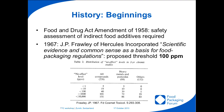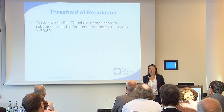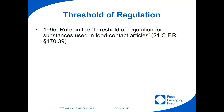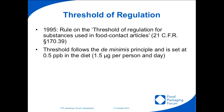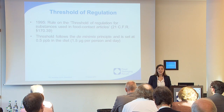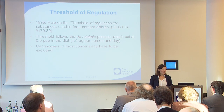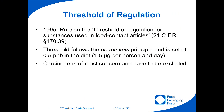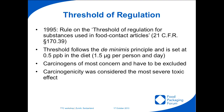Of course he excluded some groups — heavy metals and pesticides. Then in 1995, the FDA introduced a new rule called the Threshold of Regulation, going back to Frawley's idea of a probability distribution for unknown chemicals to cause an effect at a certain threshold. The FDA set that threshold at 0.5 ppb — four orders of magnitude below what Frawley proposed 30 years earlier — which gives you an indication of how much analytical detection sensitivity increased over those decades. It's important to note that carcinogens were considered the most severe toxic effect and so were excluded from the Threshold of Regulation concept. This rule is still in effect today in the US.